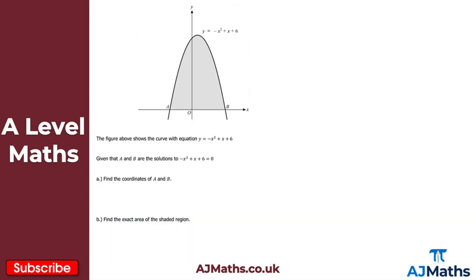Moving on to the next question: we have a negative quadratic with an n-shape. I'm looking to find the shaded region R, which goes between points A and B. The question is scaffolded so we find the coordinates of A and B first, then find the exact area of the shaded region. A and B are where the curve meets the x-axis, i.e. when y equals zero.